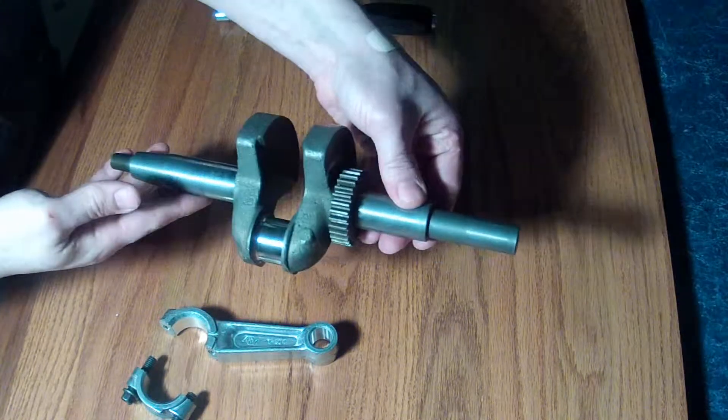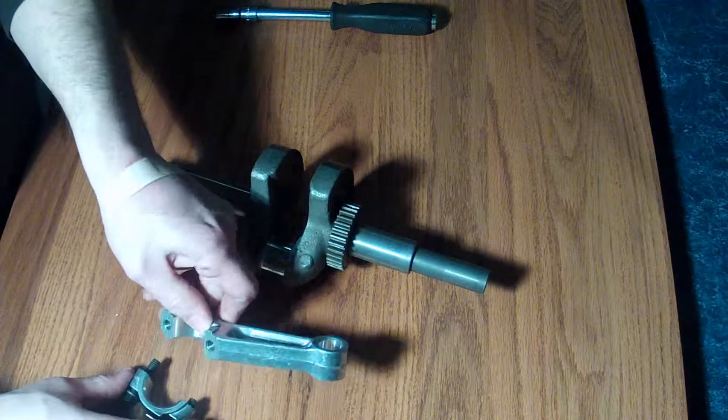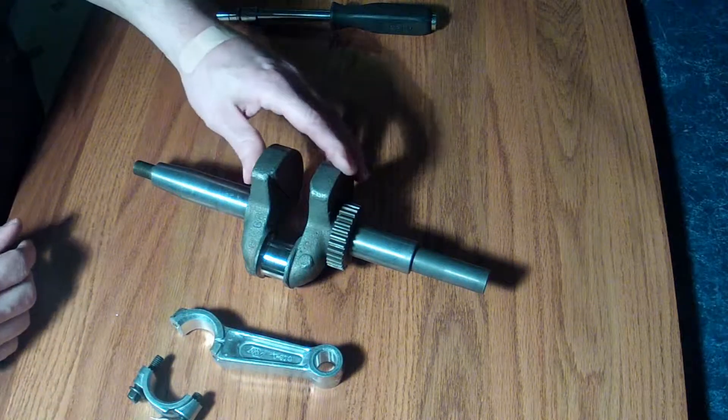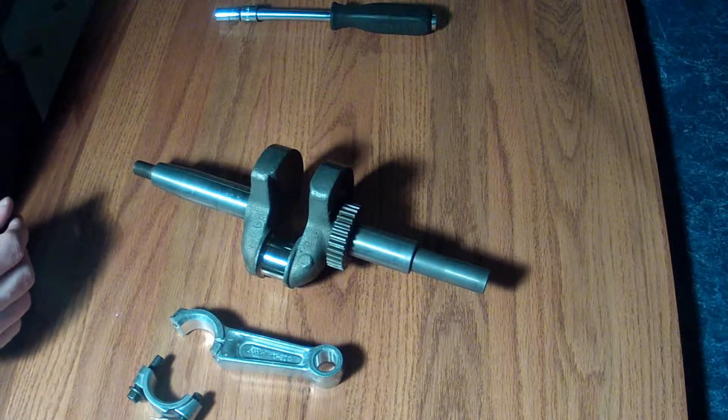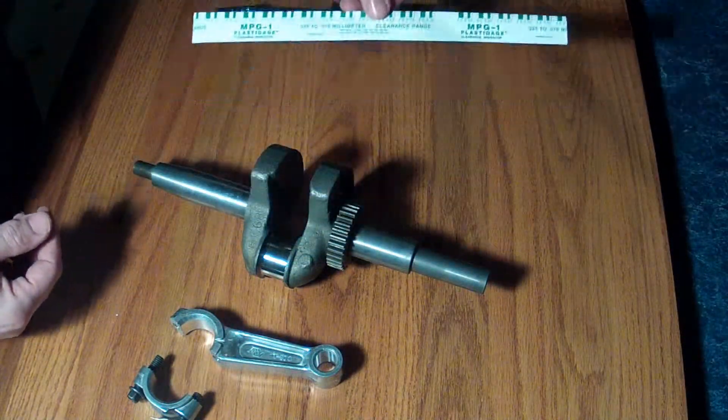All right, now we've got our crank all cleaned up and we have a new connecting rod. What I want to demonstrate today is the use of a product called PlastiGauge, and what this will allow us to do